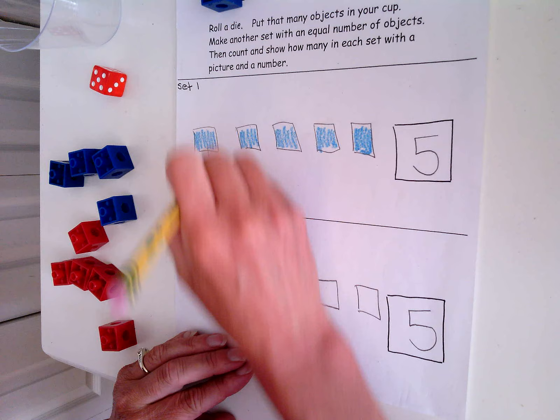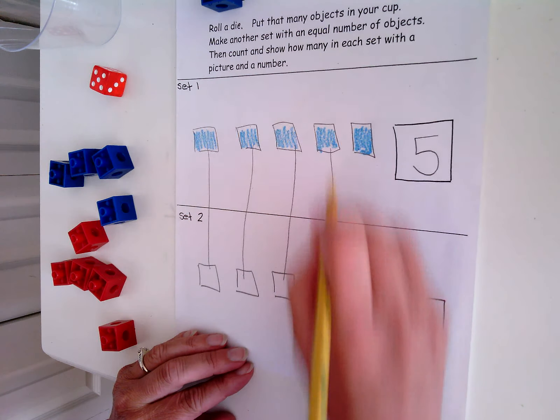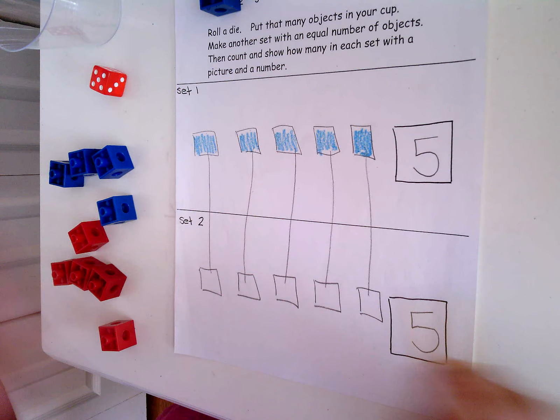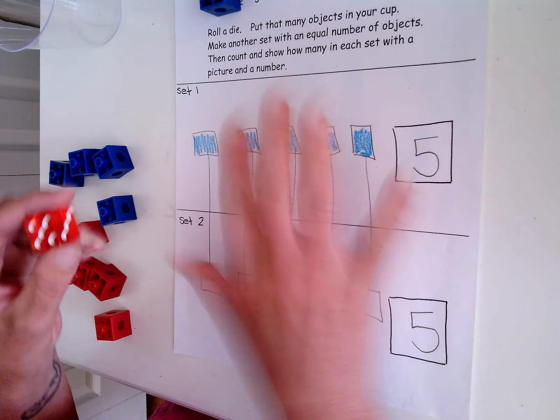Now when you roll your die, you might not roll five, you might roll a different number. I want your journal to reflect what you roll.